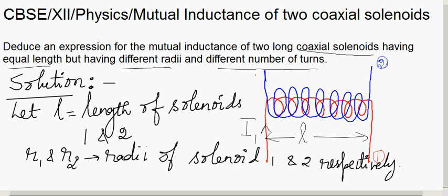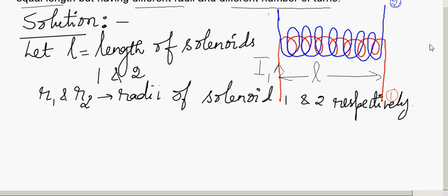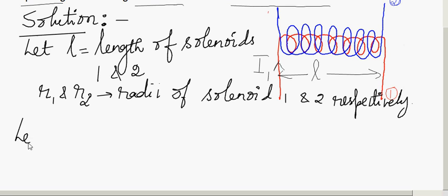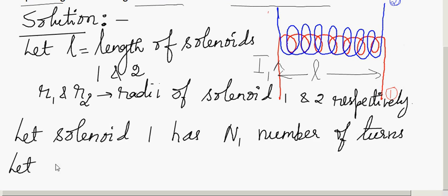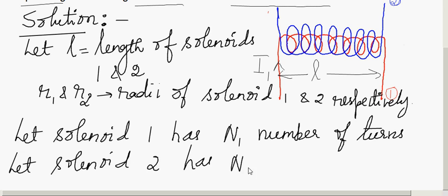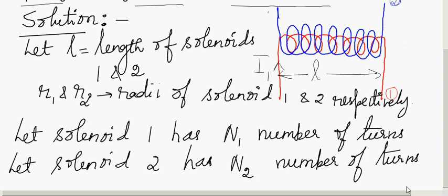Let solenoid 1 have N1 number of turns, and let solenoid 2 have N2 number of turns. Now we have assumed all the quantities. When a current I1 is passed through solenoid 1, a magnetic field is set up.